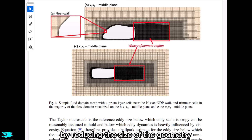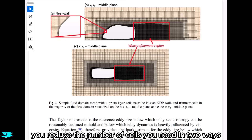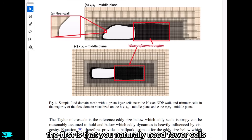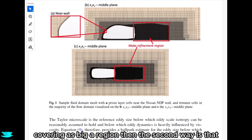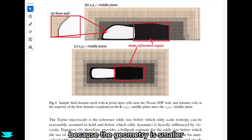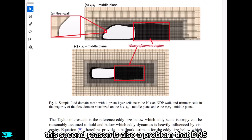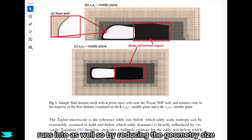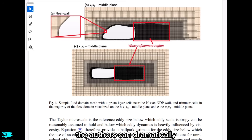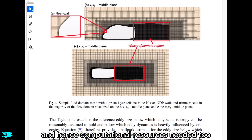By reducing the size of the geometry, you reduce the number of cells needed in two ways. First, you naturally need fewer cells because the geometry is smaller, so you don't need cells covering as large a region. Second, because the geometry is smaller, the Reynolds number is lower, the turbulence is less complicated, and the cells don't need to be as small. By reducing the geometry's size, the authors can dramatically reduce how many cells they need and hence the computational resources too.